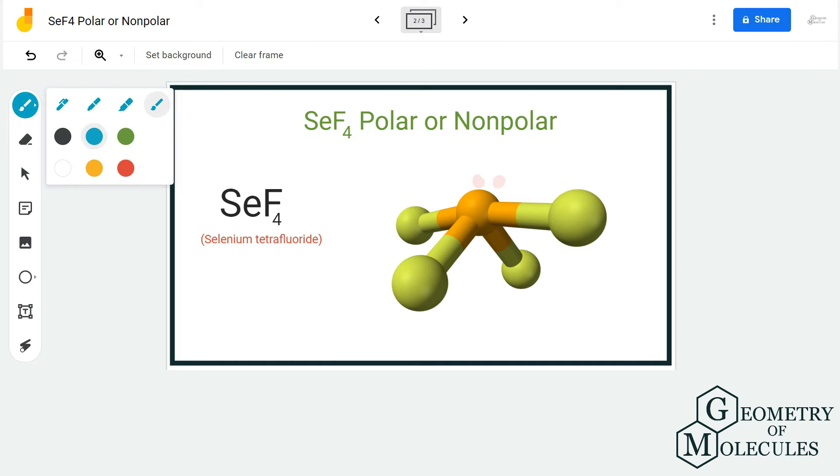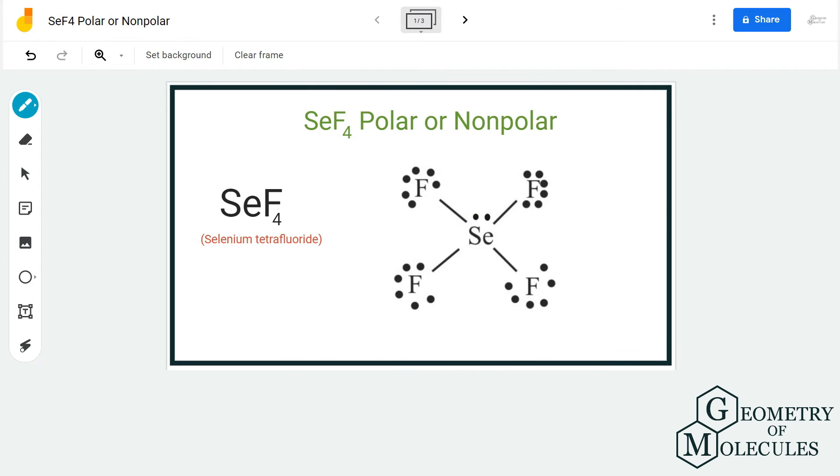Now if you look at the electronegativity values of selenium and fluorine, fluorine is more electronegative than selenium atom. So the electrons that are shared between selenium and fluorine atoms will be pulled towards fluorine atom more because it is more electronegative.